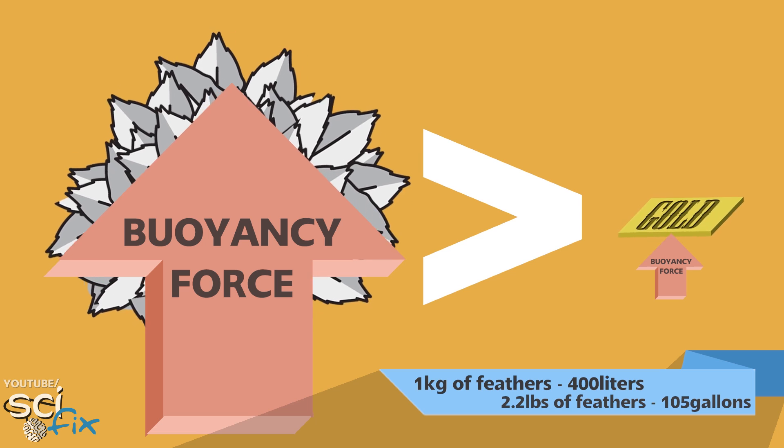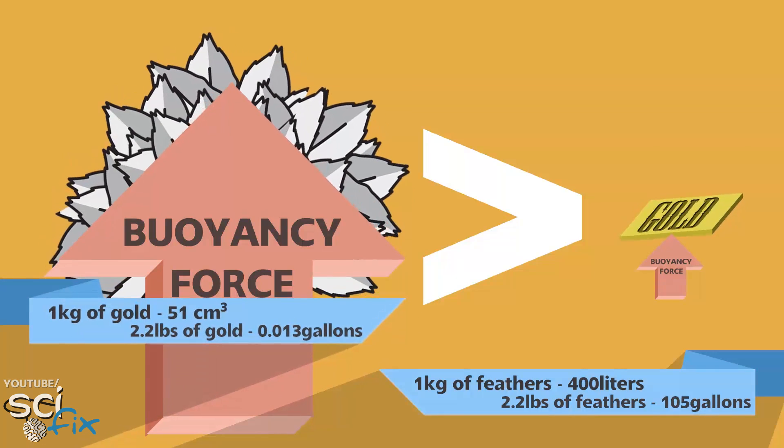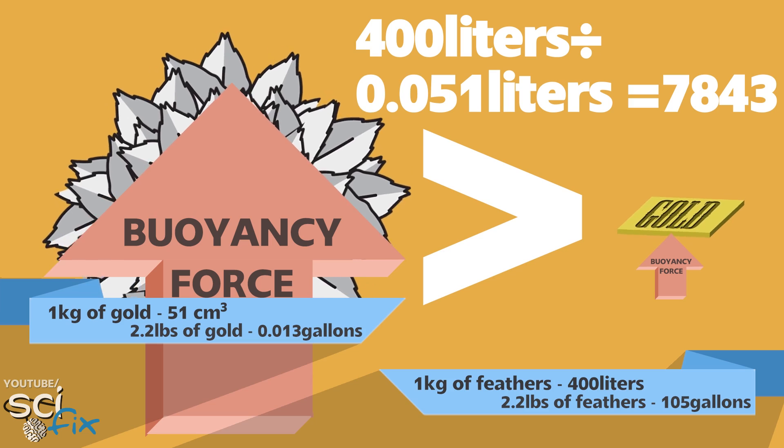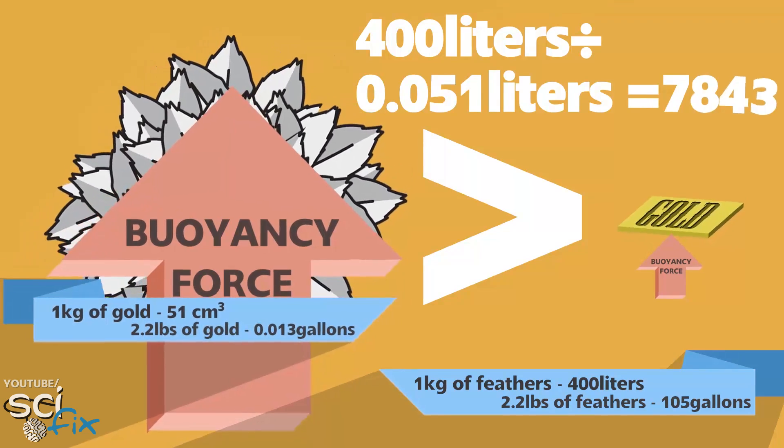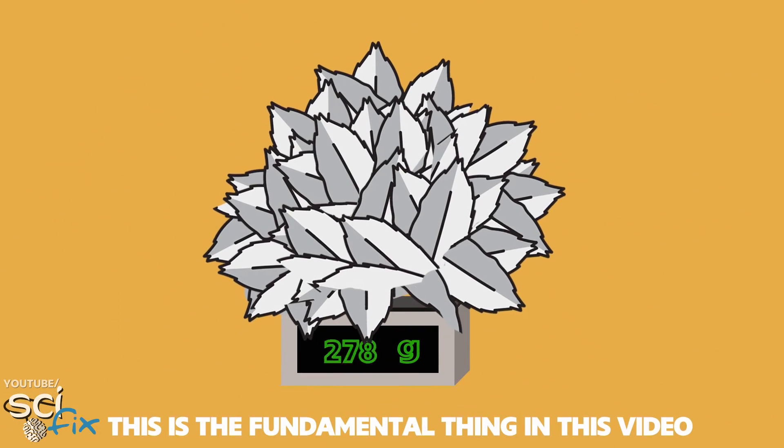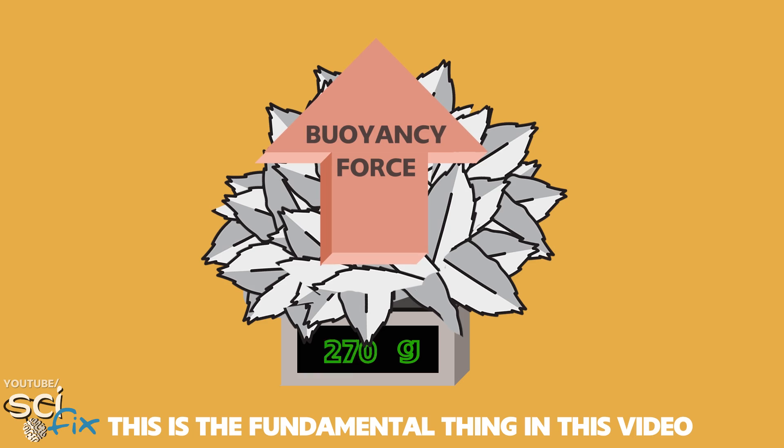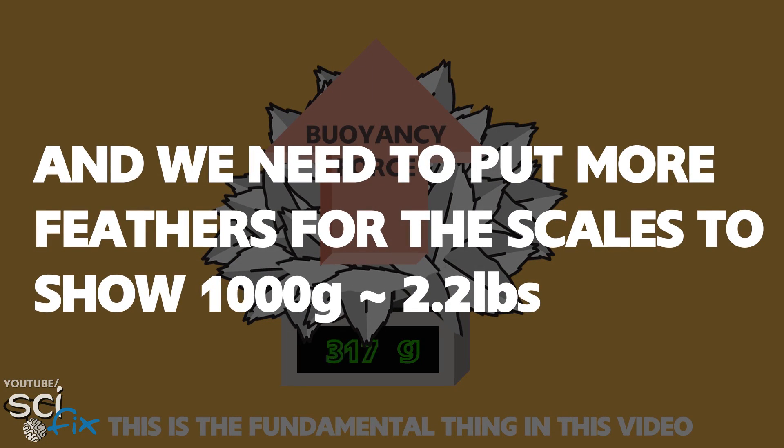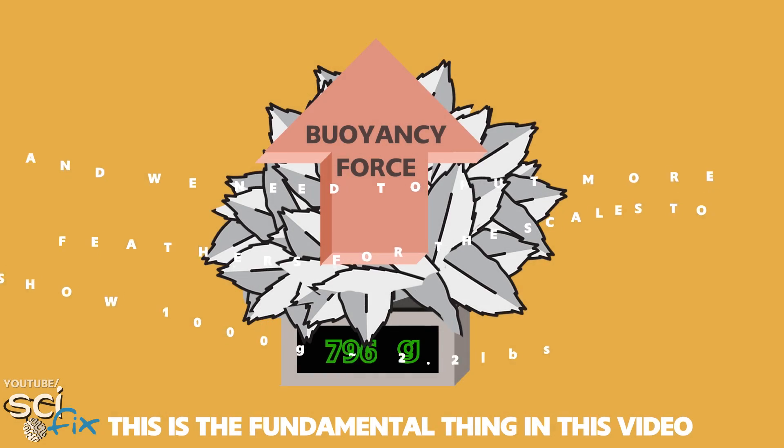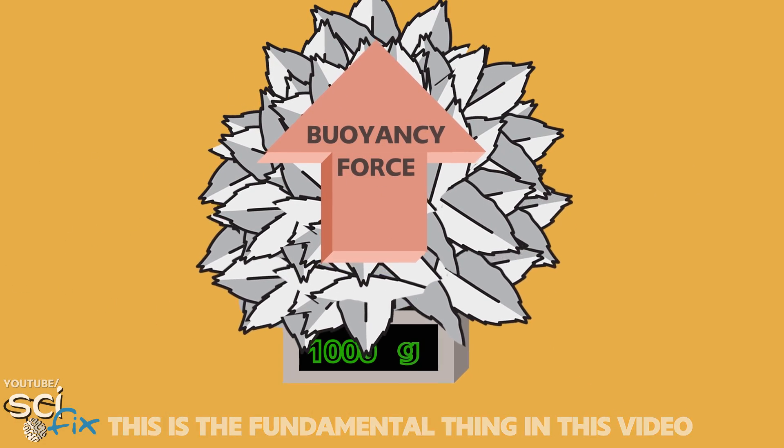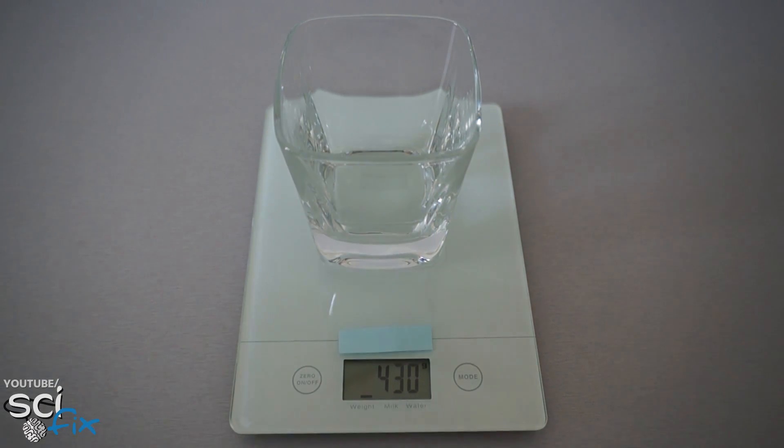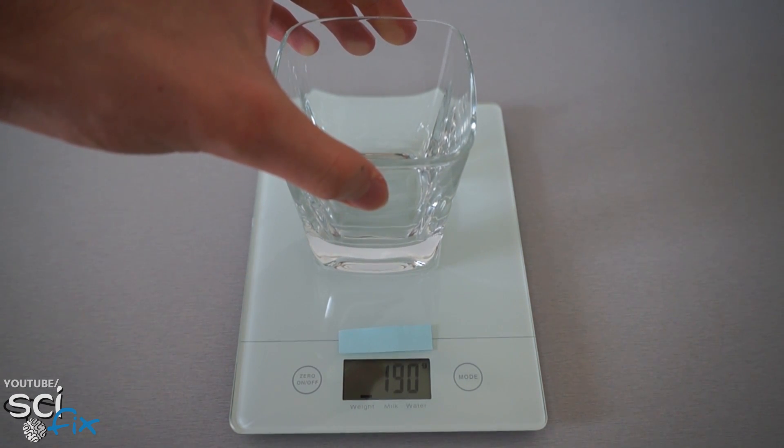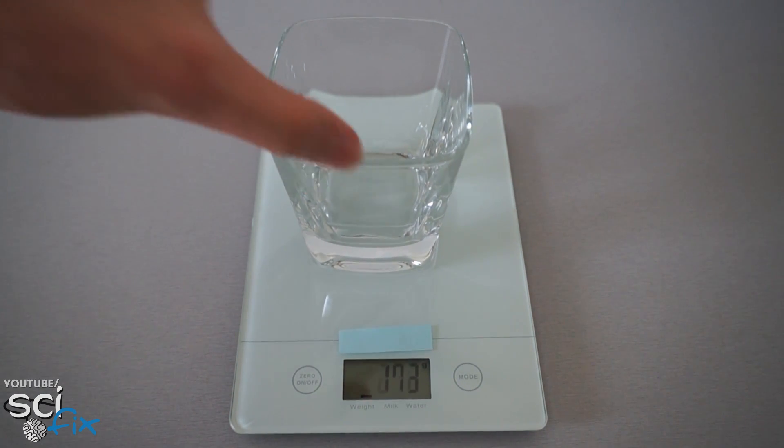And one kilogram of gold occupies only 51 cubic centimeters, which is 8000 times less. So when we're there around it, feathers are being lifted more than the gold bar. And it takes more than one kilogram for the scales to show exactly 1000 grams. As I apply some upwards force to this glass, scales show less weight than before. But the mass obviously doesn't change.